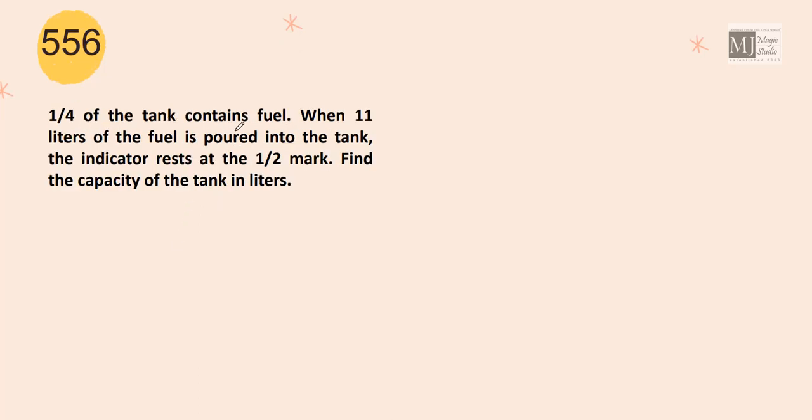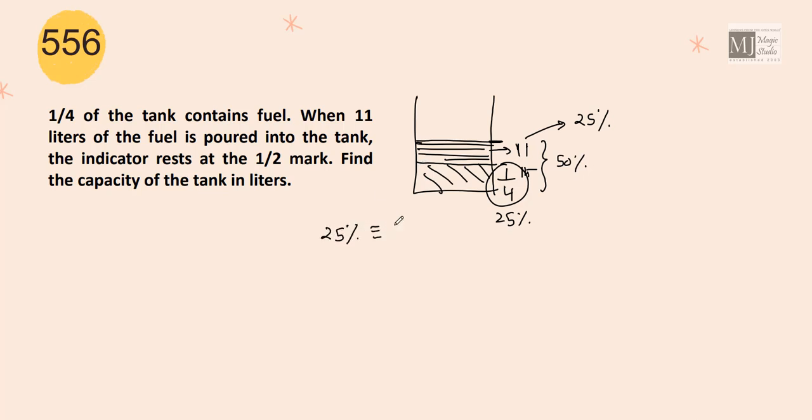One-fourth of the tank contains fuel. When 11 liters of the fuel is poured in, the indicator rests at half mark. That means, now it is 50% full. This is 50%. One-fourth was 25%. That means, this 11 liter represents 25% of the capacity of the tank. So 25% capacity is 11 liters. Find the capacity of the tank. That means, 100% capacity of the tank is 11 by 25 into 100. That is 11 into 4, 44 liters.